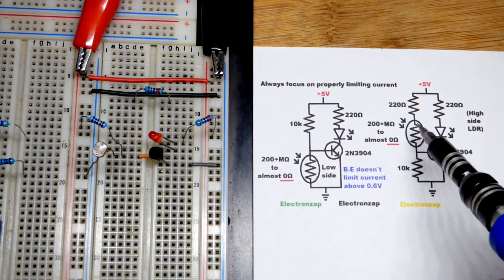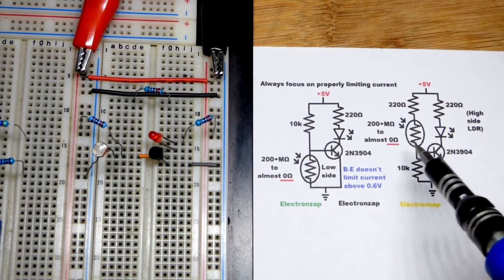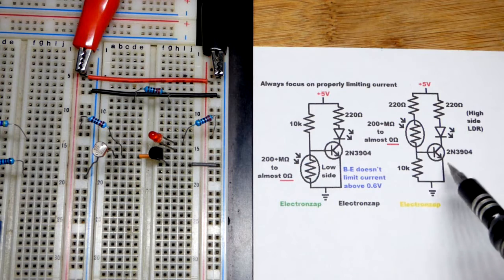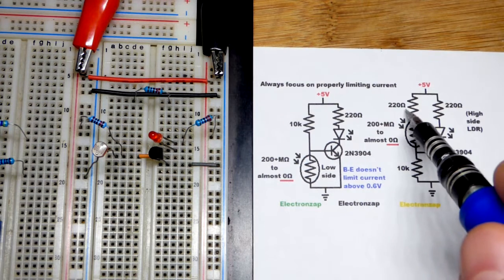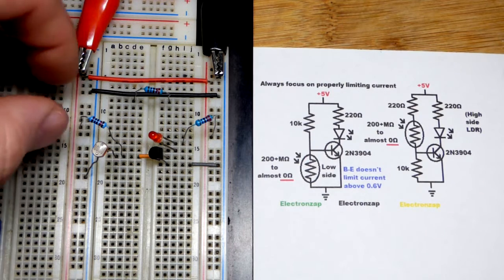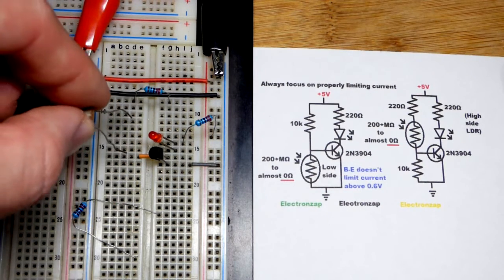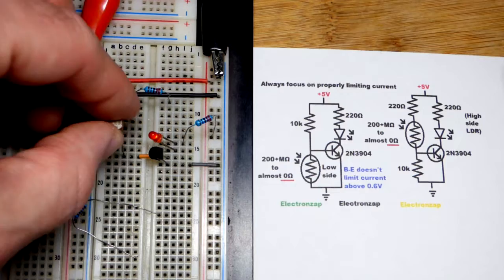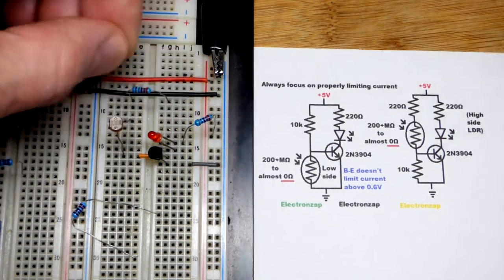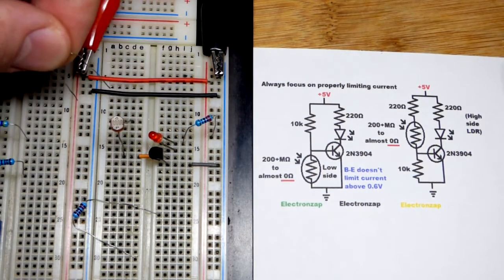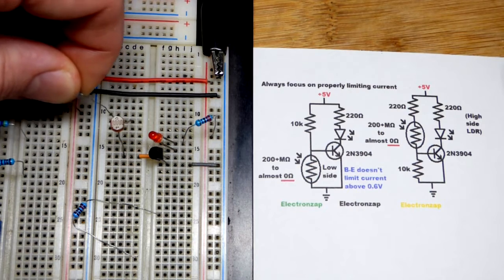it can conduct almost freely, which would damage a transistor base to emitter. So it's good to put a minimum resistance in series with it when nothing else is going to limit the current. We're going to put the light dependent resistor up there, 220 ohm resistor going to the positive supply.